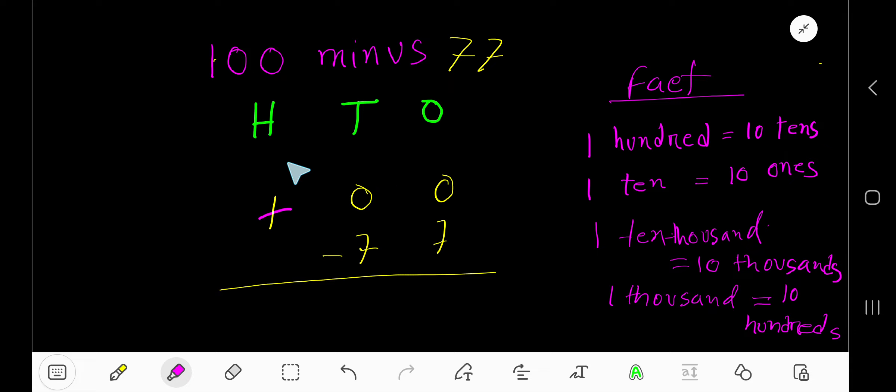If you borrow 100, then you will have 0, 100. 100 equals 10 tens.